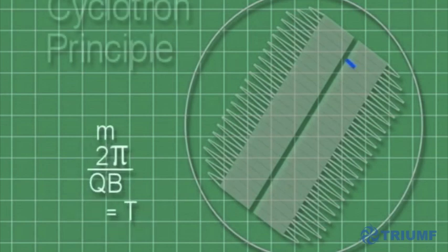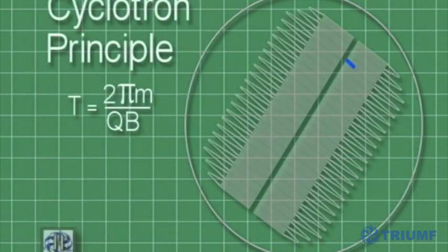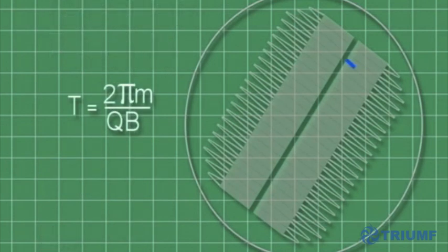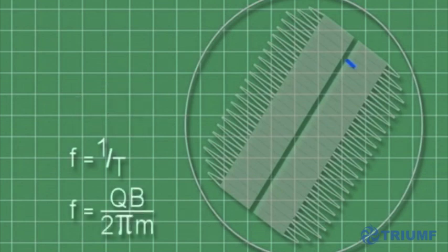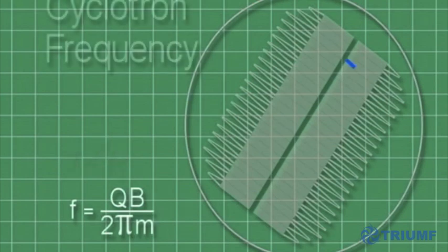The frequency is the inverse of the orbital period, so this formula tells us that the orbital frequency is also constant, and this is known as the cyclotron frequency.